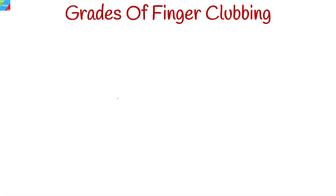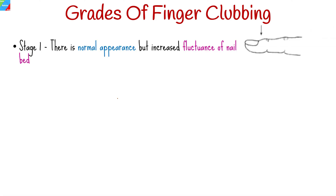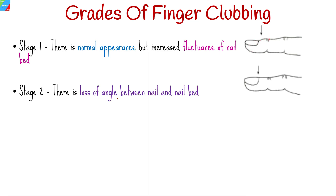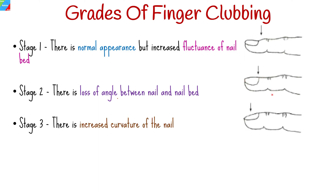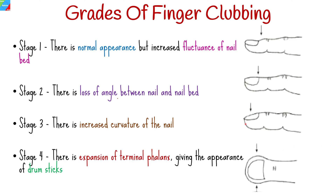Finger clubbing can be graded into four grades or stages. In stage one, there is normal appearance but increased fluctuance of the nail bed. In stage two, there is loss of angle between the nail and nail bed. In stage three, there is increased curvature of the nail.